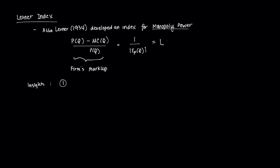A few insights that Abba Lerner determined: first, the index generally runs between 0 and 1. The higher the number, the greater the monopoly power of the firm. With higher monopoly power, the firm is able to set a price above marginal cost — and the greater the power, the further above marginal cost that price can be set.